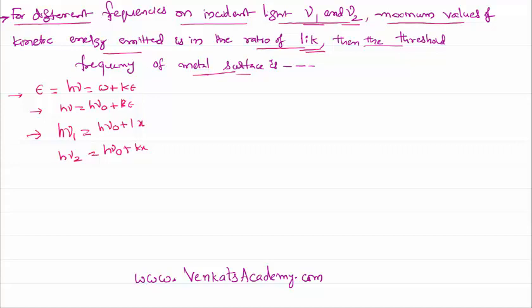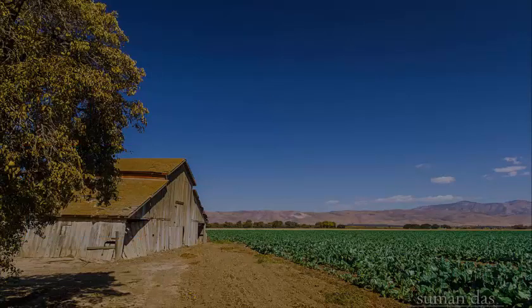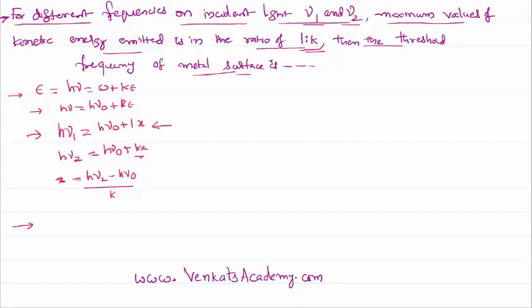We can solve this problem by taking the value of x and substituting it here. From here I can write x as (h*nu2 minus h*nu0) by k. Let us substitute this equation. We know the first equation is h*nu1 equal to h*nu0 plus x, or 1x. In the place of x I can write (h*nu2 minus h*nu0) by k.